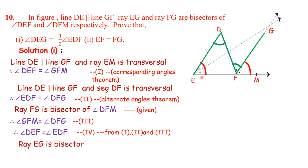Next, ray EG is a bisector of angle DEF. Here DEF is bisected by ray EG, which is equal to angle D.